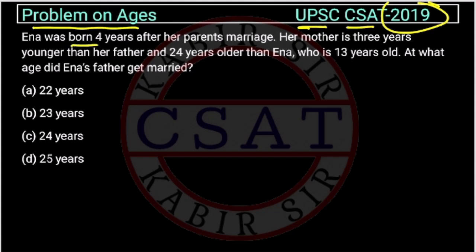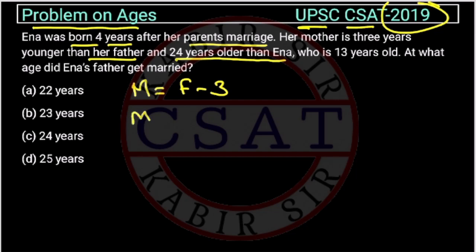Anna was born 4 years after her parents' marriage. Her mother is 3 years younger than her father — so mother equals father minus 3. The mother is 24 years older than Anna, and Anna is currently 13 years old.